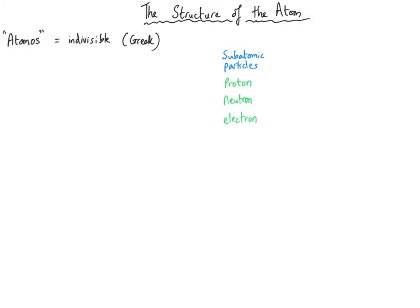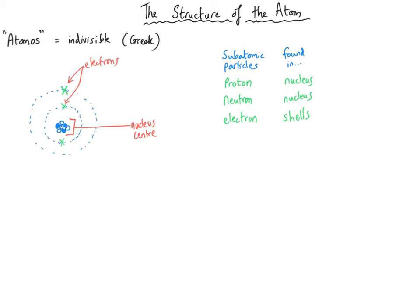You find the protons and neutrons in the nucleus of the atom, which is the centre of the atom. And then orbiting around the nucleus, a bit like planets orbiting the sun, you find electrons. The paths that the electrons follow are called shells, or sometimes called energy levels.